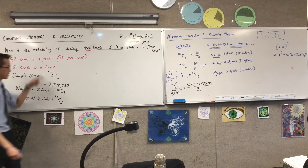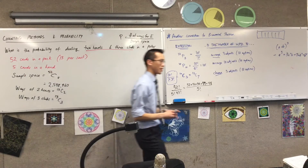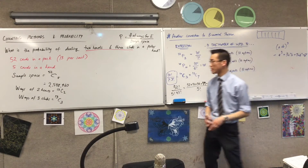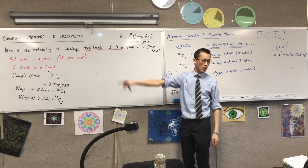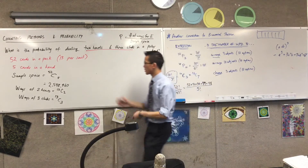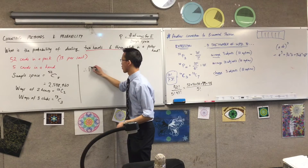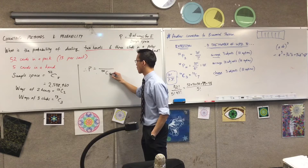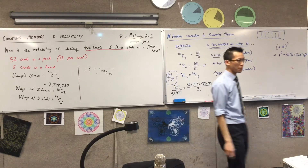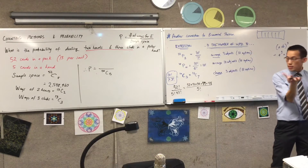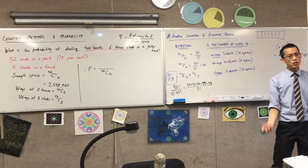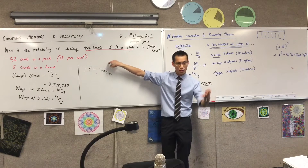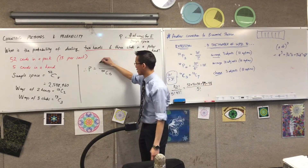I've got all of these pieces, and now the big question is how do I combine them? Down here we know the sample space — 52C5 — goes on the bottom. So the probability is going to be something over 52C5, that huge number. Now with these other two numbers I've got, in what way do I combine them to get the numerator? Suggestion one is multiplying them together.